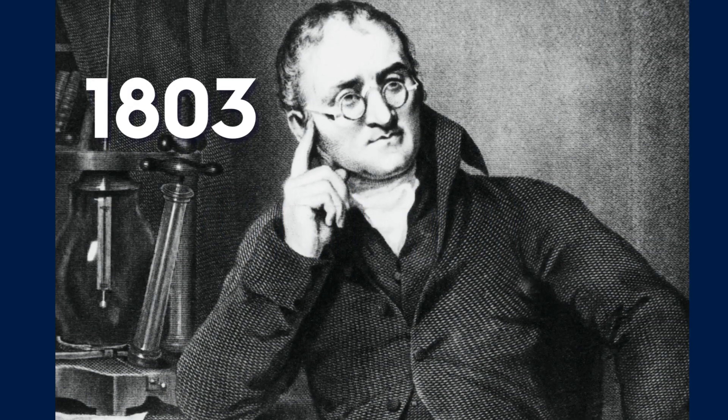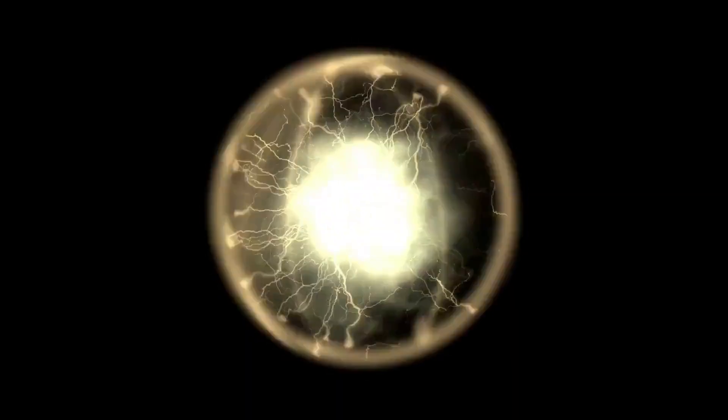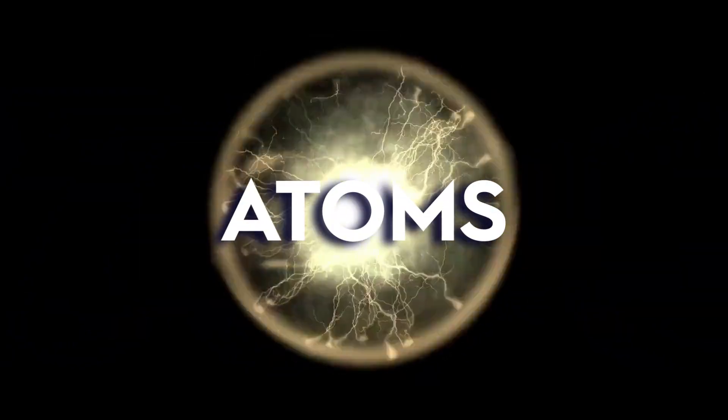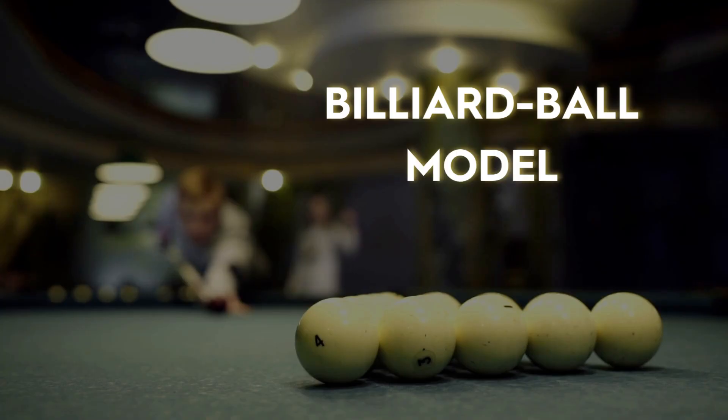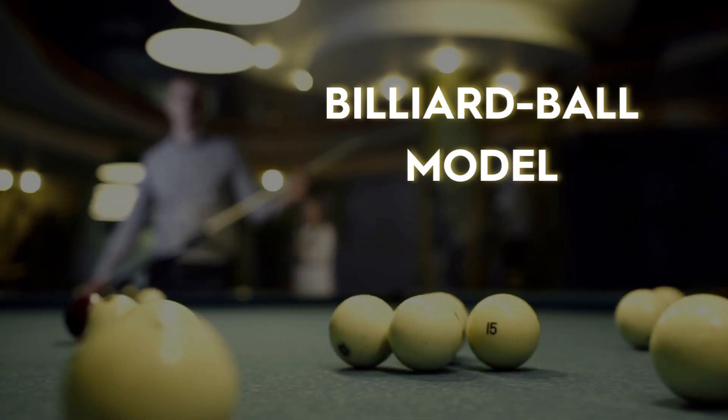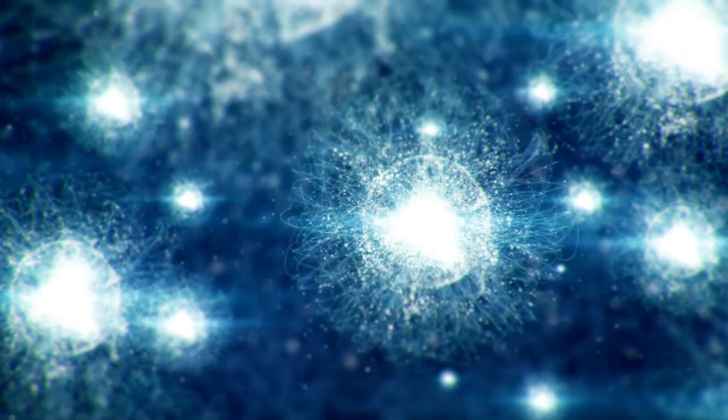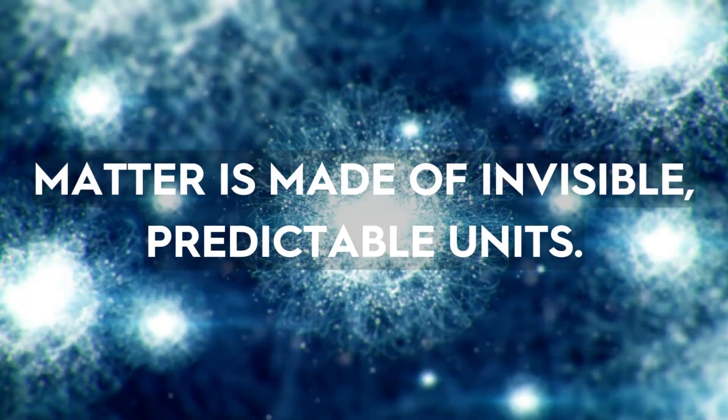In 1803, John Dalton used simple mass ratios to argue that matter is built from solid indestructible spheres called atoms, identical within each element. Dalton's billiard ball model explains conservation of mass but says nothing about electricity or smaller pieces. Still, it gave science a starting point, the idea that matter is made of invisible, predictable units.